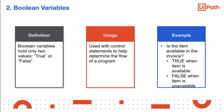A boolean variable, also known as true-false variables, has only two possible values, true or false. A boolean variable is primarily associated with conditional statements, which allow different actions by changing control flow depending on whether a programmer's specified boolean condition evaluates to true or false. Thus, a boolean variable is commonly used with control statements to determine the flow of a program as they enable the user to make decisions. A variable holds true when a condition is met, false when a condition is not met. For example, holds true when the item in the invoice is available, holds false when the item is unavailable.